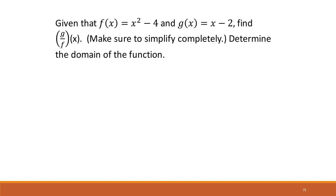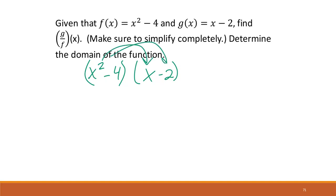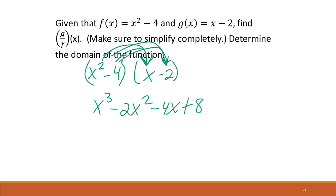Now looking at f · g as a function of x, we have (x² − 4)(x − 2). When keeping the variable, we must FOIL or multiply out. So x² times both terms in the second factor gives x³ − 2x², then minus 4 times both terms gives −4x + 8, resulting in x³ − 2x² − 4x + 8.